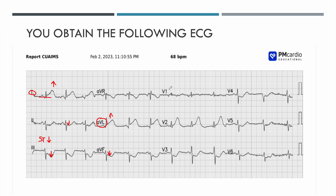Moving on to the precordial leads — we have a little bit of elevation in V2. That's interesting because V2 is not contiguous with leads 1 and AVL, which are looking at the lateral wall. V2 is looking more at the septal wall, so it's not contiguous. That's kind of a strange thing to see.